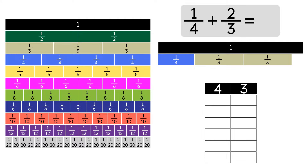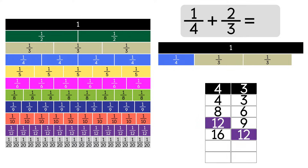To find the common denominator, we're going to use multiples. First we find the multiples of 4: 4, 8, 12, 16, and so on. Now let's write out the multiples of 3, keeping writing them until we find a common multiple with 4: 3, 6, 9, 12. As you can see, 12 is the common multiple.